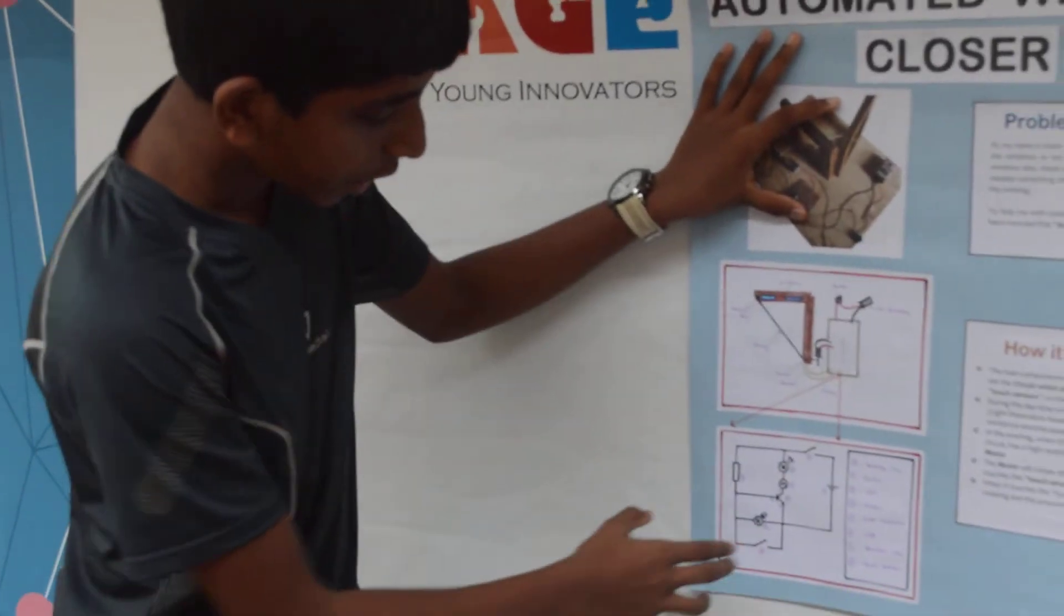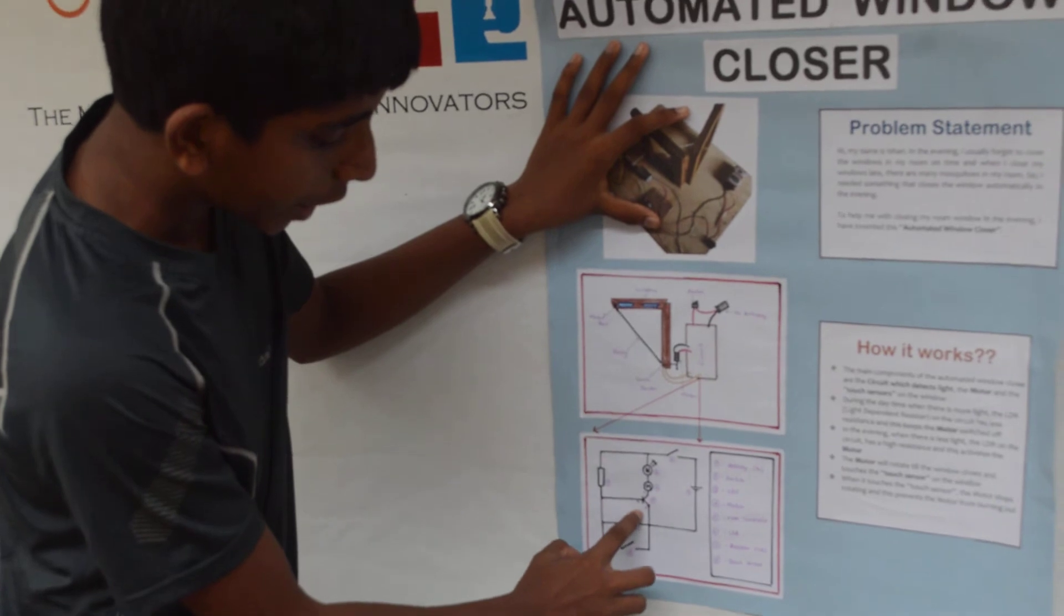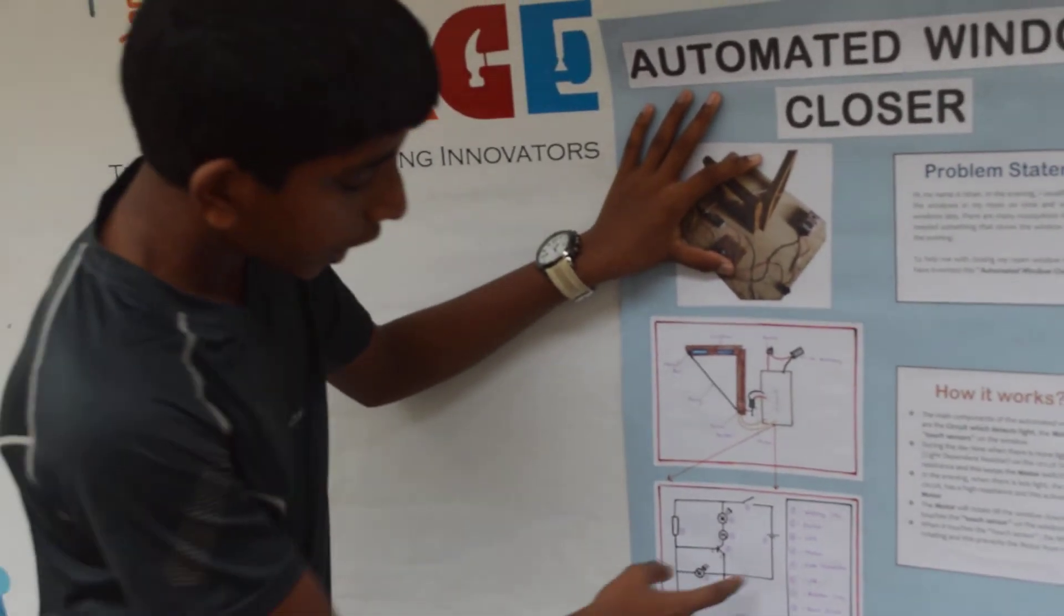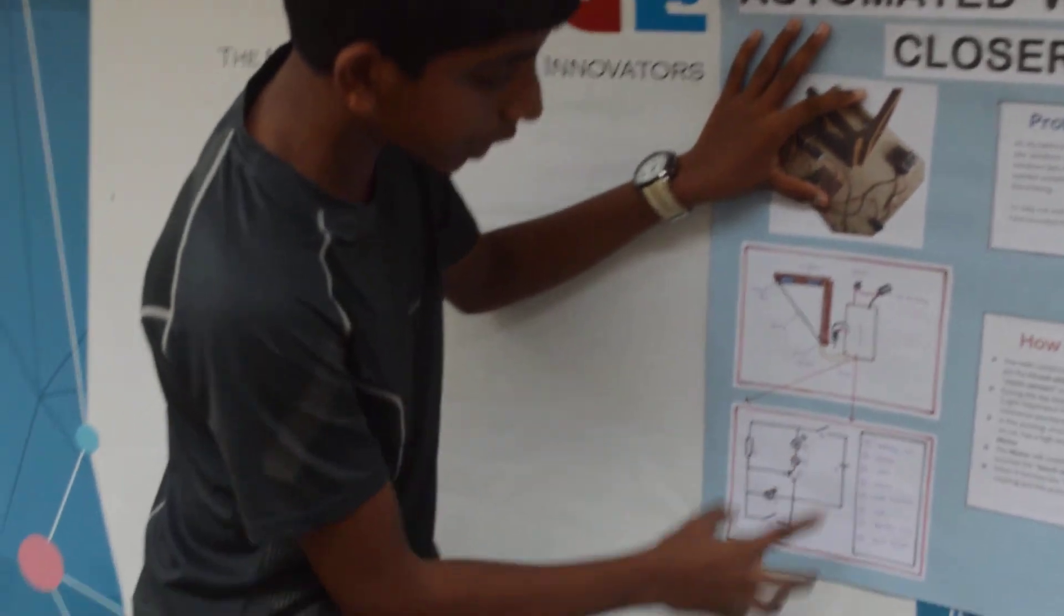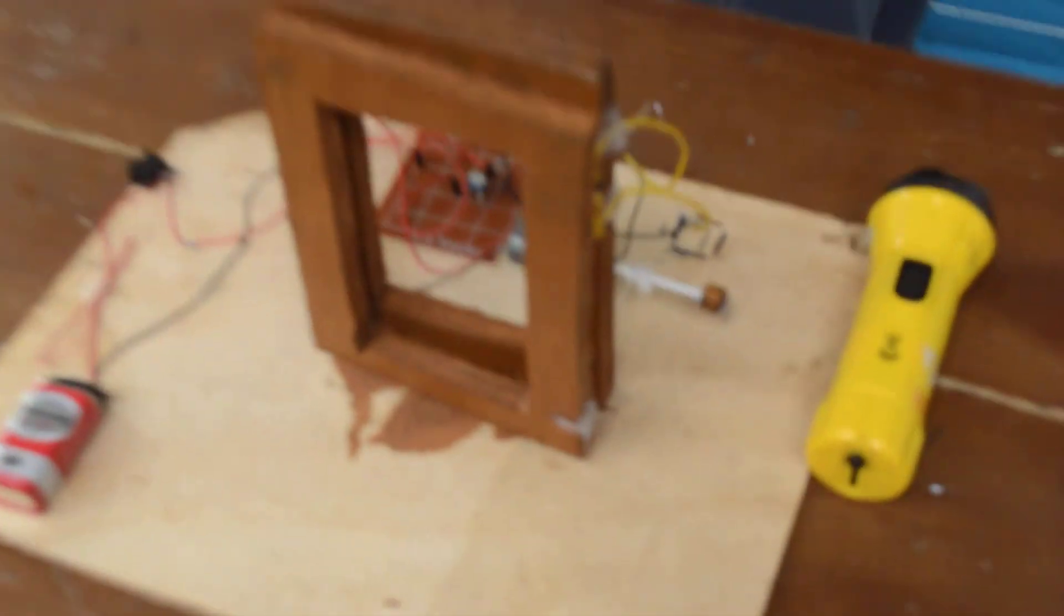At night, because of this LDR, there is a different voltage difference and allows the circuit to complete. So when the motor works, it touches the touch sensor.